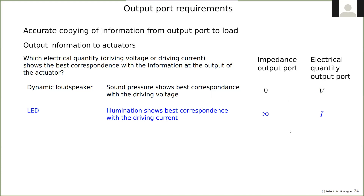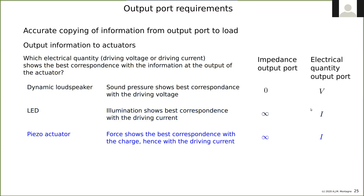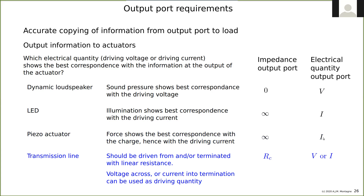LED illumination should be driven with current — the current through the LED is well related to intensity, while the voltage involves a non-linear, temperature-dependent characteristic that corrupts the information. Similarly, a piezo actuator should be driven with current. For a transmission line at the output, it should again be terminated with a well-known impedance. For a DC motor, drive it with voltage to control speed, or with current to control torque.